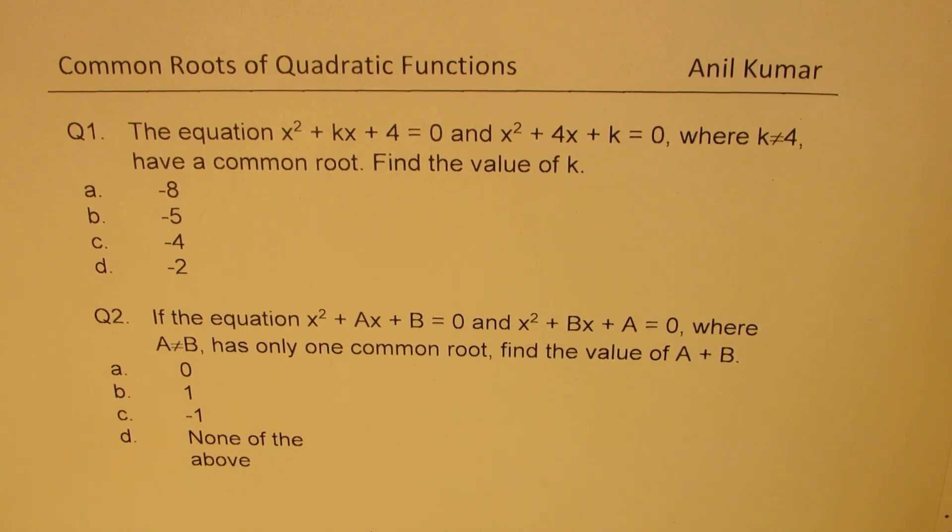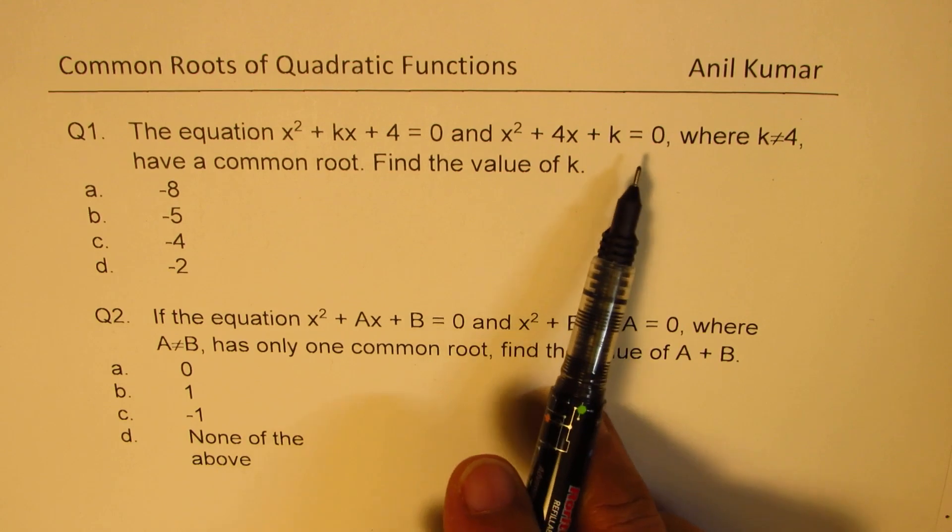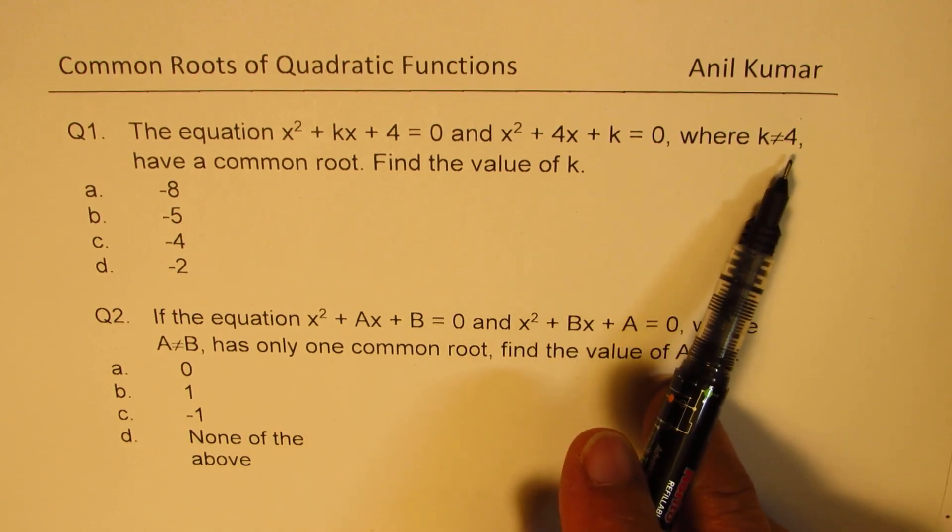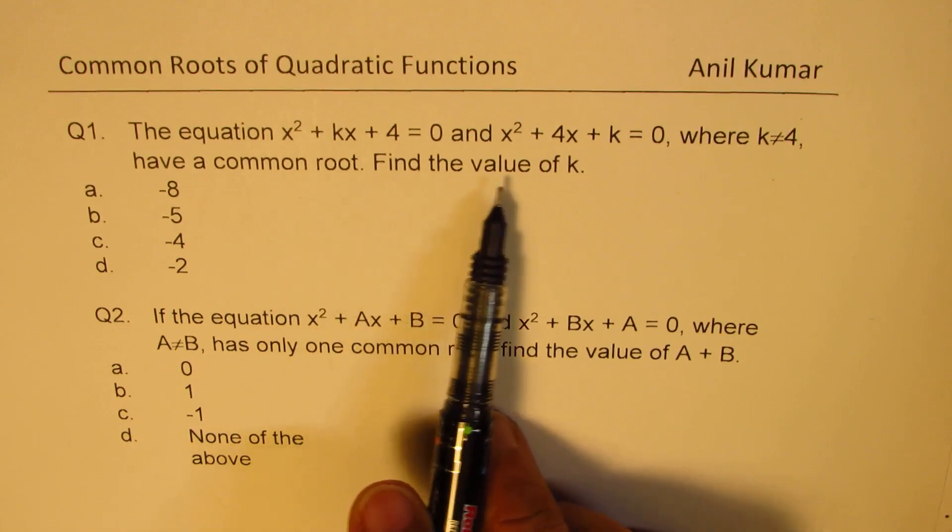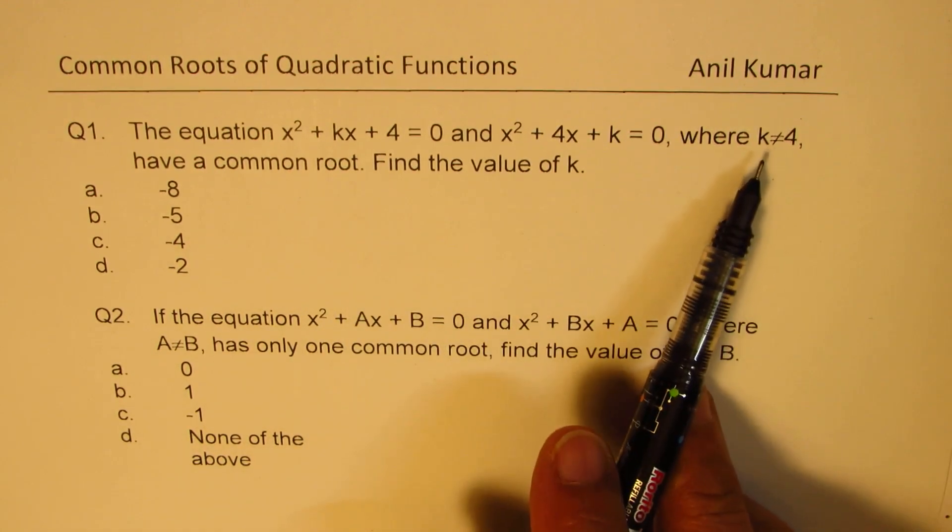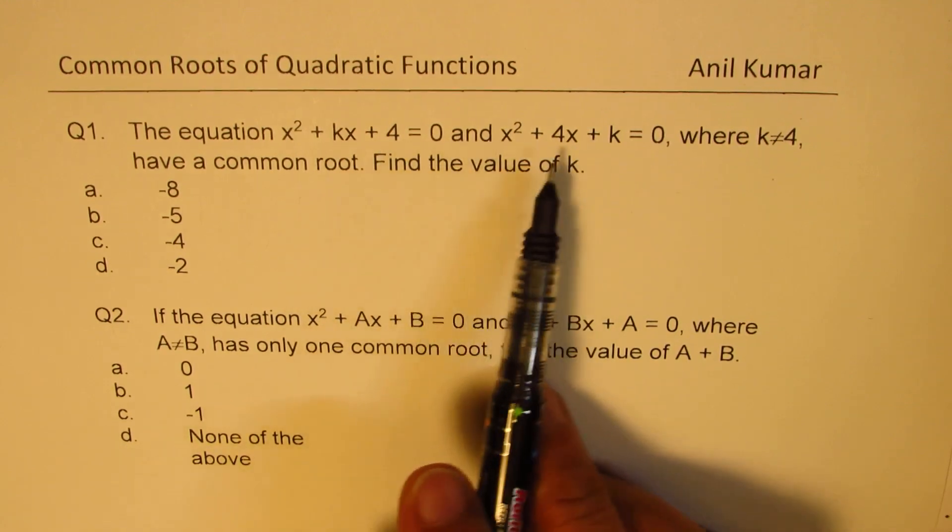Question number one here is: the equation x² + kx + 4 = 0 and x² + 4x + k = 0, where k ≠ 4, have a common root. Find the value of k. This restriction makes sense. If k is 4, then both are same equations, right?